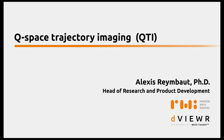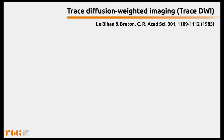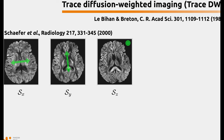To give you a better sense of where QTI comes from, I will review a few conventional diffusion methods first. Let's start with Trace Diffusion Weighted Imaging, or Trace DWI. For this technique you can acquire three diffusion images, each of them associated with one specific gradient direction.